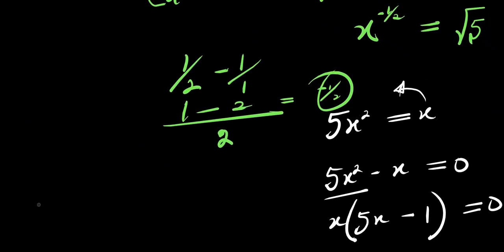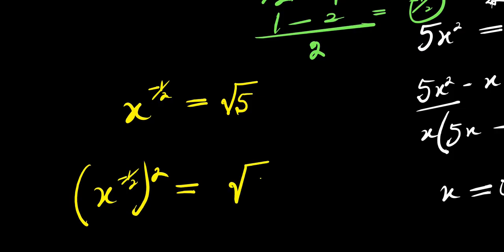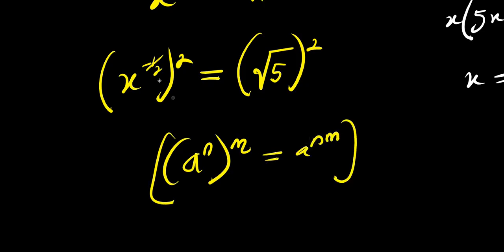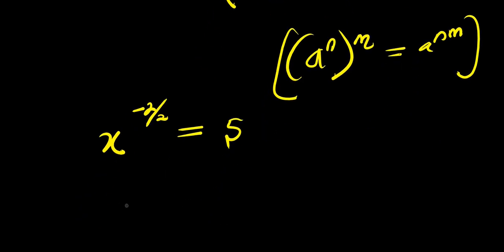Now we solve for x. We have x power negative 1 over 2 equals square root of 5. We raise both sides to the power of 2. Remember, if you have a power n raised to the power of m, this equals a power n times m. So x power negative 2 over 2 — cancelling gives x power negative 1 — equals 5, because square root of 5 squared is 5. So x power negative 1 equals 5.